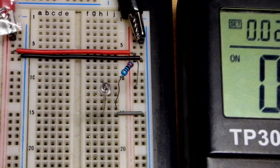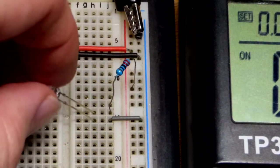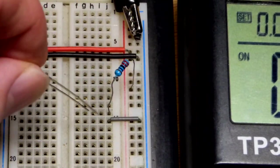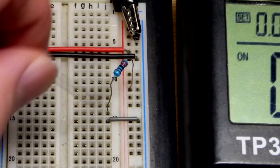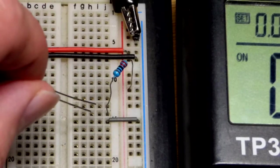And so somebody asked, what if you put it in backwards? So we're going to put long lead anode to positive supply, short lead cathode to the negative supply.